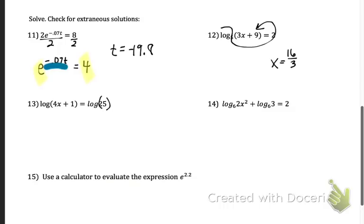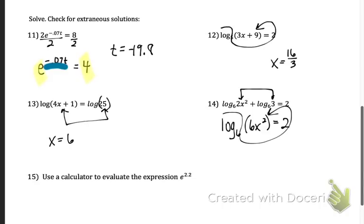For problem 13, we have two logs set equal. So we're just going to take the insides and set them equal. So you're going to have 4x plus 1 equals 25. Once you solve that, you should get x equals 6. And for 14, we first need to condense these two logs. Since they're being added, we're going to have log base 6 of 2x squared times 3, which would be 6x squared. And then we just change forms and solve. This one's going to have two answers, since you're left with a quadratic. You get x equals a positive and a negative square root 6. On all of these, make sure that you're checking for extraneous solutions. An extraneous solution occurs whenever you have a negative inside of the log.